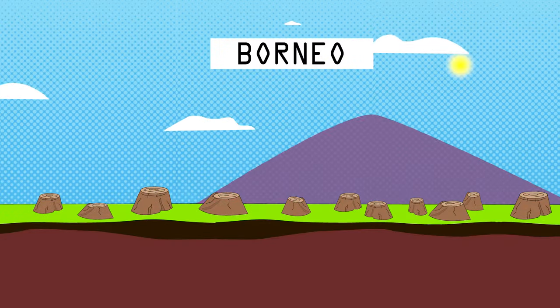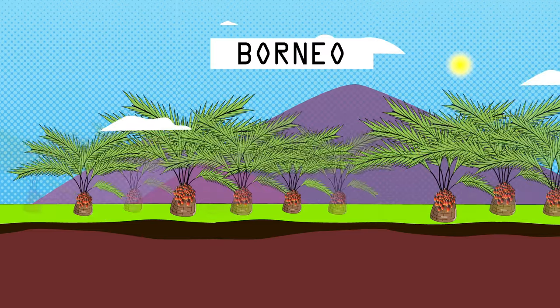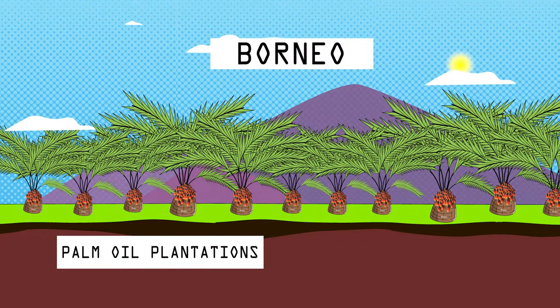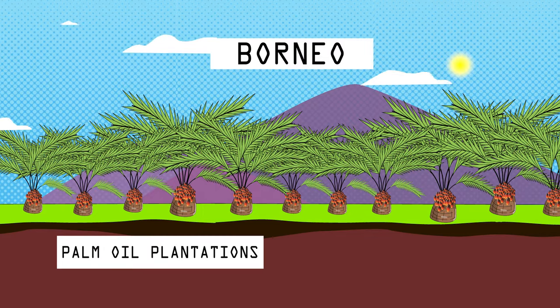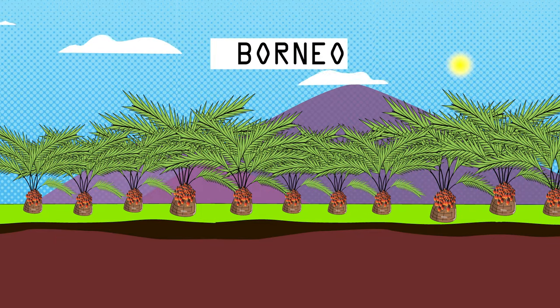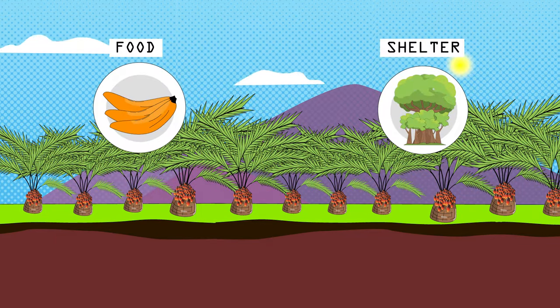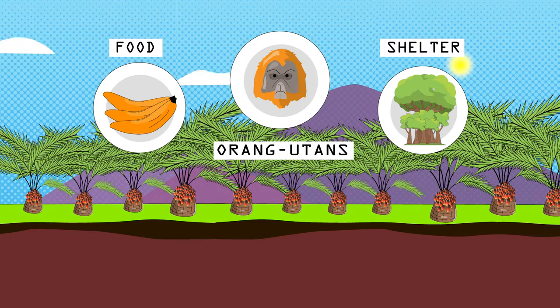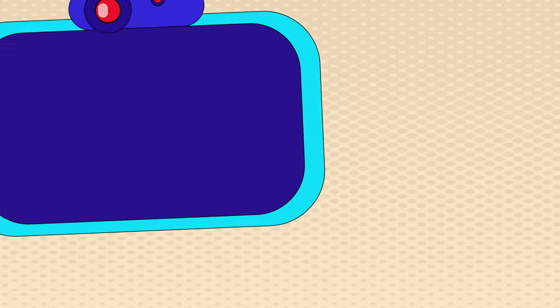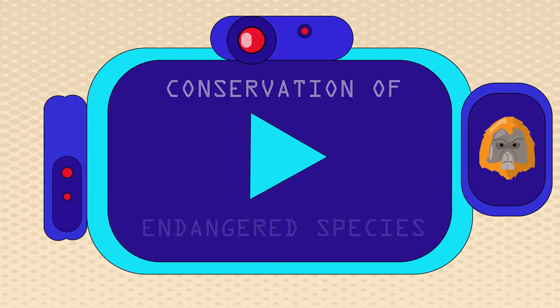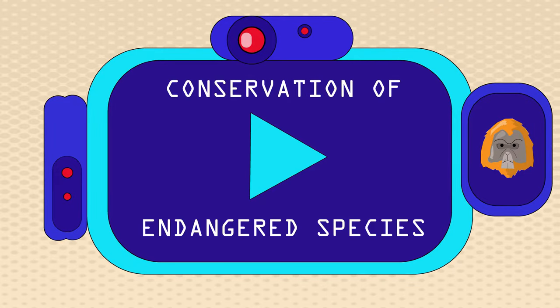For example, in Borneo, rainforests are being cut down to make room for palm oil plantations. The species that live in the rainforests cannot survive in the plantations. They may not be able to find food or shelter, like orangutans who are an endangered species. You can find out more about endangered species, and how conservation is helping them by watching this video.